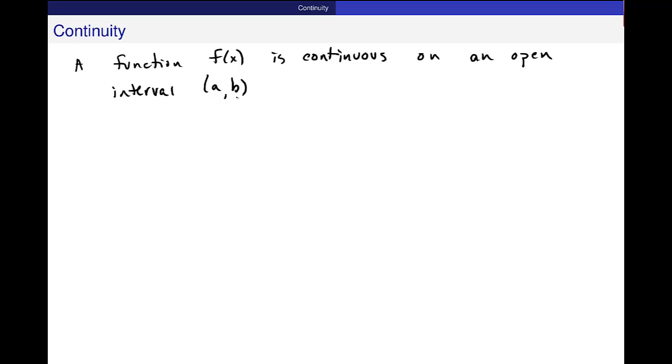This is interval notation, right? If it is continuous at every point in that interval. So every point between a and b, if the function is continuous there, then it's continuous, we say, on this whole open interval.